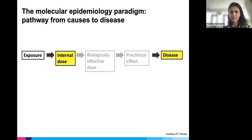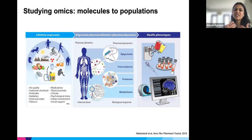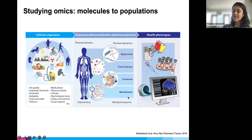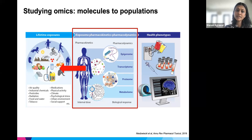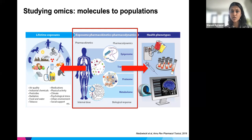This brings me to the next step in the molecular epi paradigm — looking at internal dose using omics. Omics are high-throughput data measured in biological samples: the epigenome, transcriptome, proteome, and metabolome. These can be linked to different exposures and measure thousands of different molecules. They are unbiased and unsupervised — we don't necessarily have to prespecify which molecules to measure. They give us insights into exposures and downstream disease effects, and the paradigm is shifting towards multiomics in studying the causes and pathways of disease.